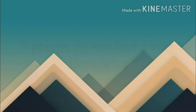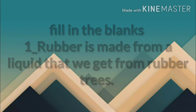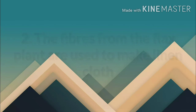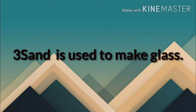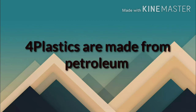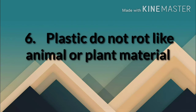Now, filling in the blanks. Rubber is made from a liquid that we get from the rubber tree. The fibers from the flax plant are used to make linen cloth. Sand is used to make glass. Plastics are made from petroleum. Plastics do not rot like animal or plant material.